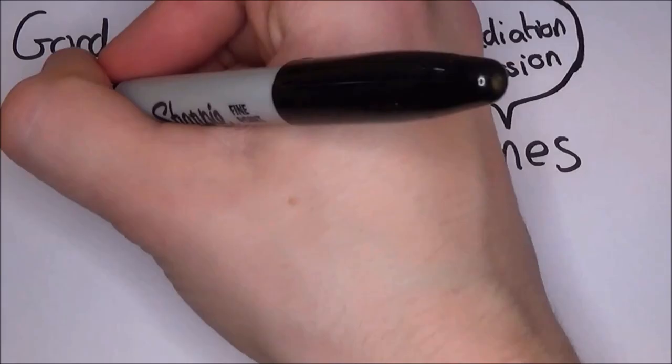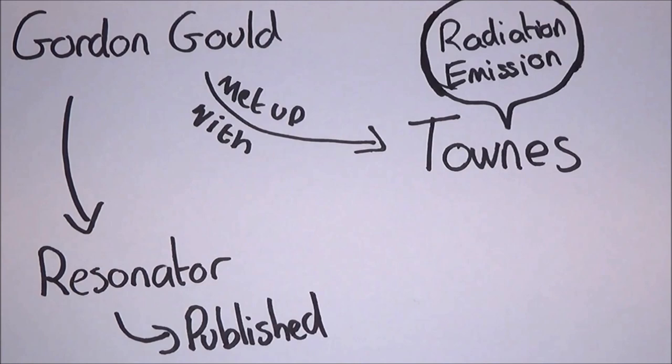At a conference in 1959, Gould published the term laser in his paper titled The Laser, Light Amplification by Stimulated Emission of Radiation. This paper included possible applications of a laser, such as radar or nuclear fusion. Gould then continued developing the idea and applied for a patent in April 1959, but was denied.